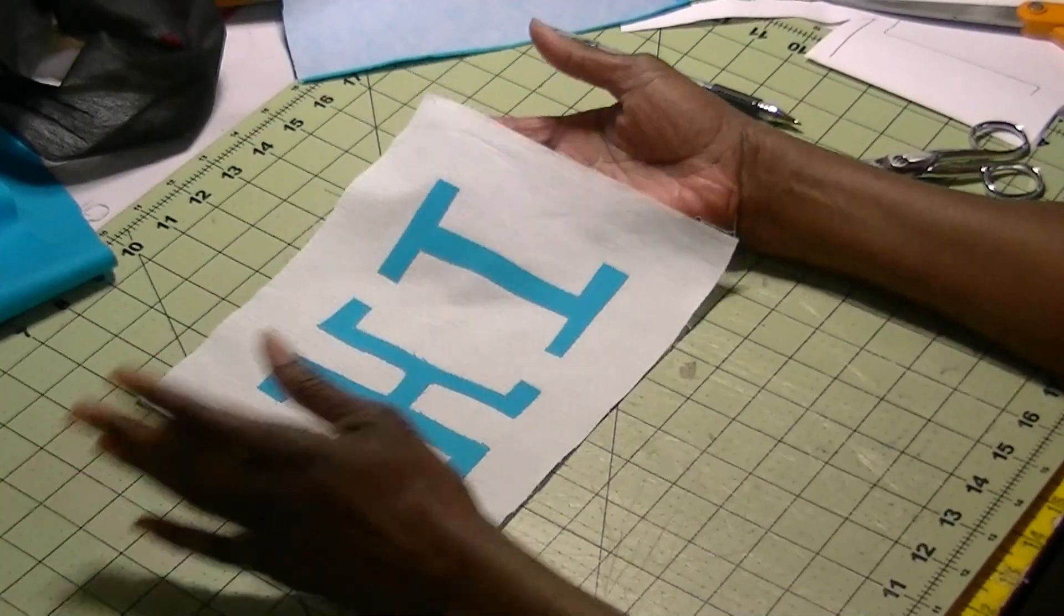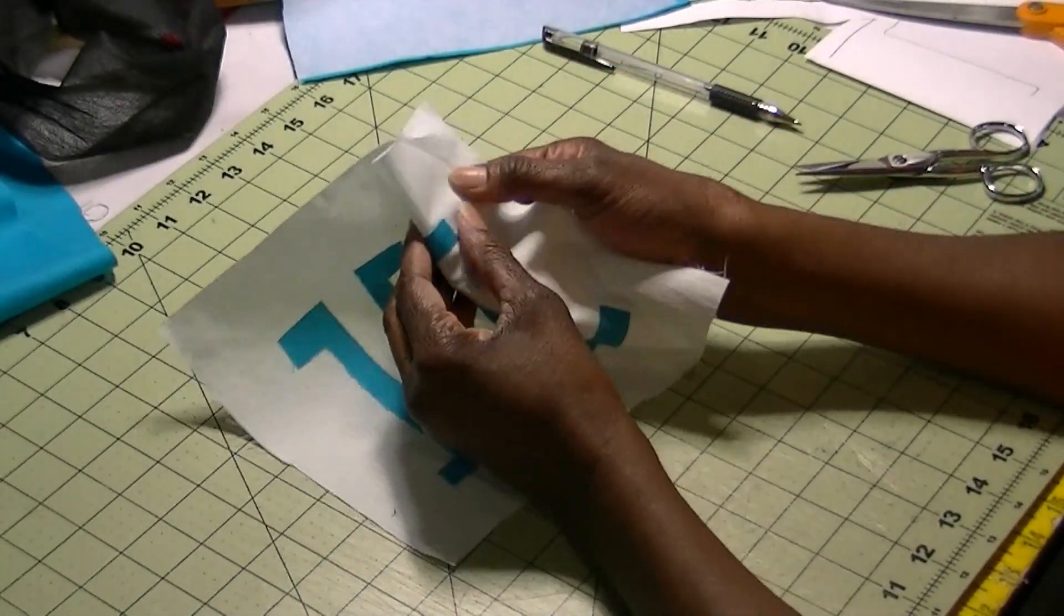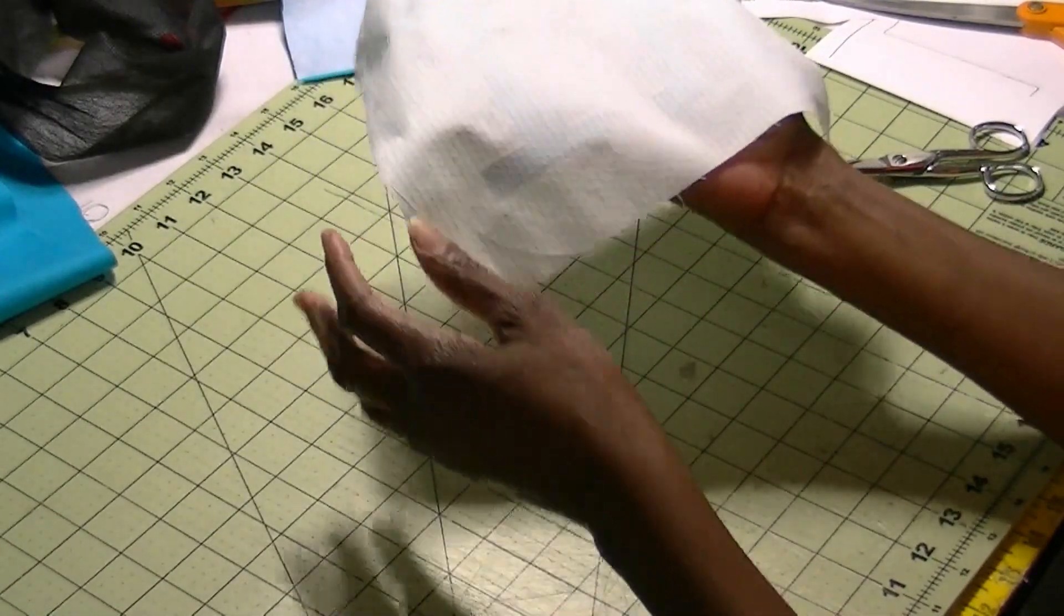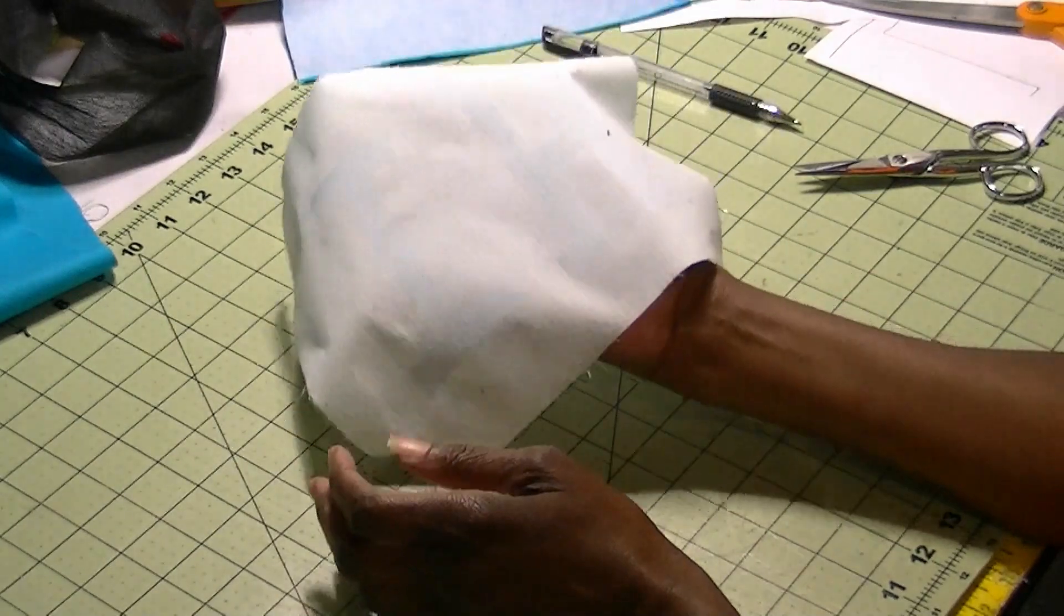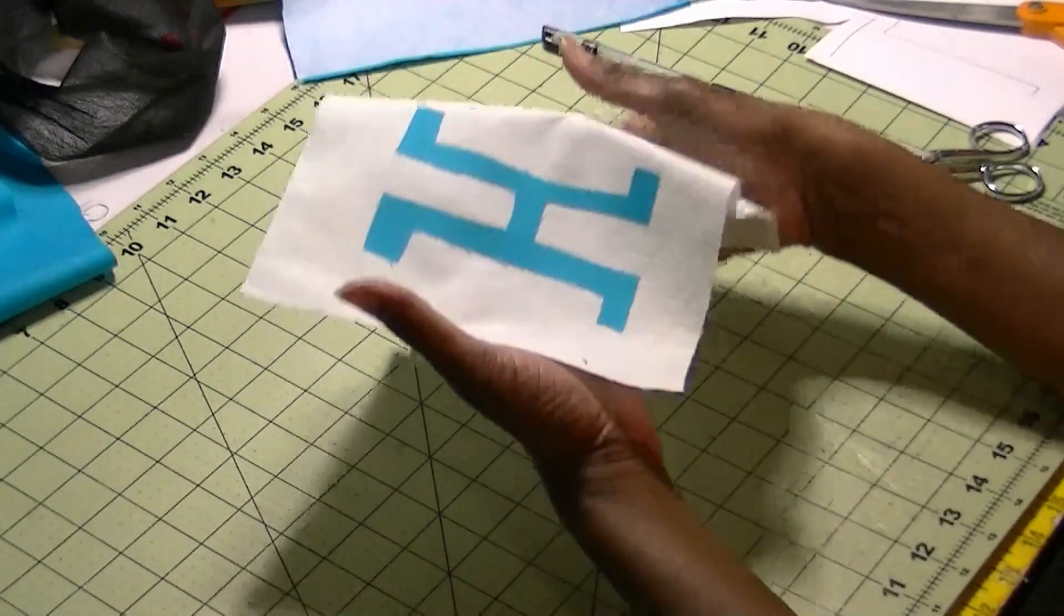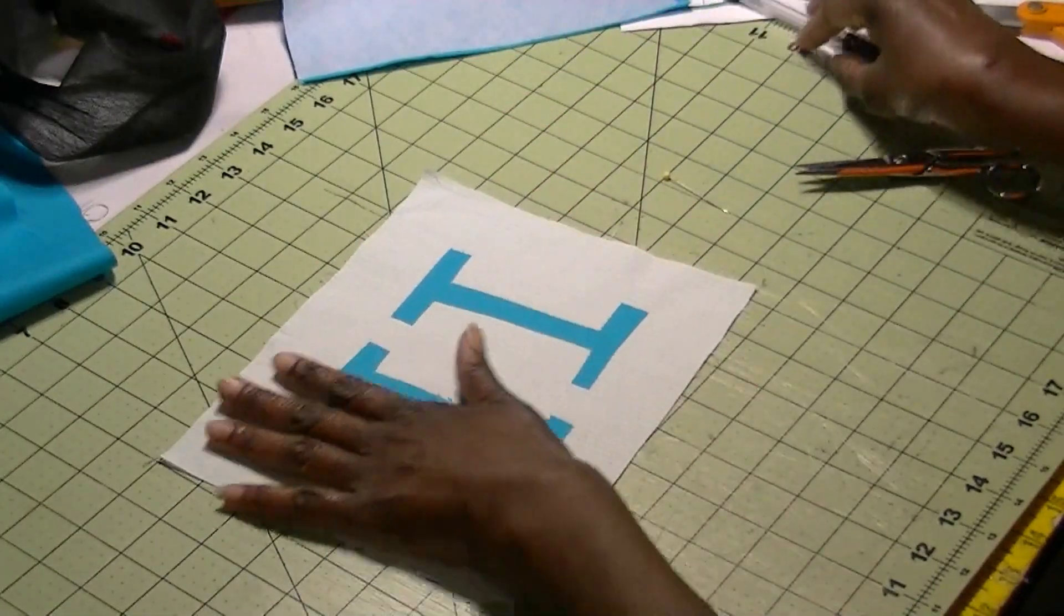So I've ironed down my letters, HI, and as you can see, they're pretty ironed down. If you look on the back, you can almost see the glue, the imprint of the glue that lets you know it is really down, really good. So now it's ready for applique.